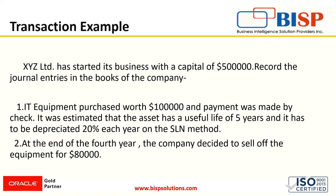Since it is a fixed asset, fixed assets are to be depreciated each year and it also has a useful life, which in this case is five years. This is the first entry where IT equipment has been purchased and its depreciation rate and useful life are also given. The second case is: at the end of the fourth year, the company decided to sell the equipment for $80,000. This is the entry for the disposal.